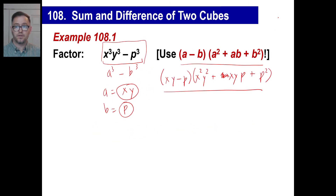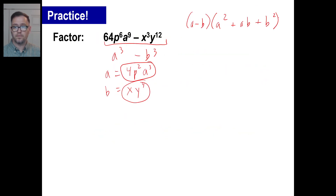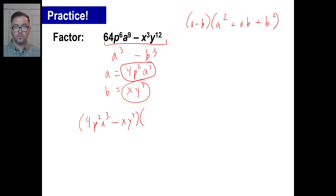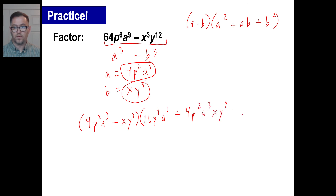Let's factor this. Since it's a minus, it factors as (a - b)(a² + ab + b²). So a is 4p²a³ and b is xy⁴. That gives us (4p²a³ - xy⁴) for the first factor. A squared: 4 squared is 16, p² squared is p⁴, a³ squared is a⁶. Plus a times b: 4p²a³ times xy⁴. Plus b squared: xy⁴ times xy⁴, where x times x is x² and y⁴ times y⁴ is y to the 8th. And there we go.